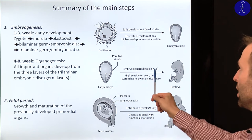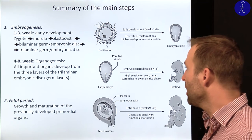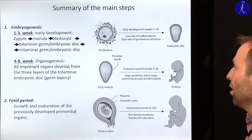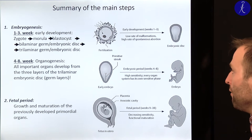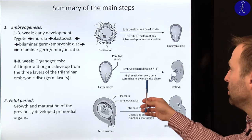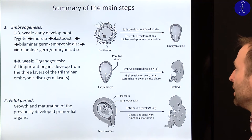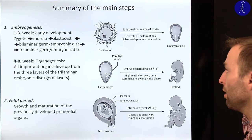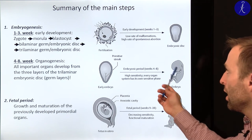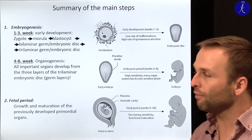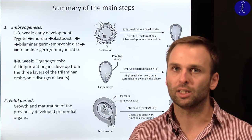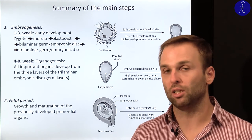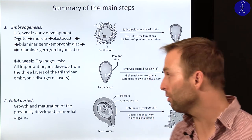In this embryonic period — weeks four to eight — you have a high sensitivity of the organs. Every organ system has its own sensitive phase where it is at the highest risk of developing malformations. If in this phase you have some sort of damage affecting the development, that carries the highest risk of congenital diseases and congenital malformations.